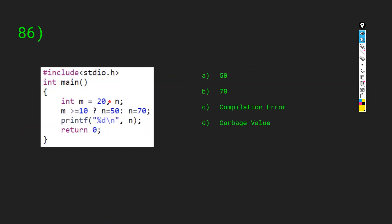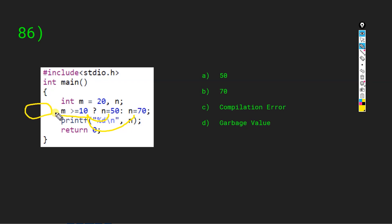We have #include stdio.h, int main, int m equals 20, and n without an assigned value. We are dealing with the ternary operator. In a ternary operator, if the condition is true one statement runs, if false another runs. But the most important thing is that on the left-hand side we need an assignment. Here, the left-hand assignment is missing, so this code will throw a compilation error.